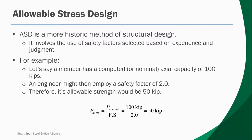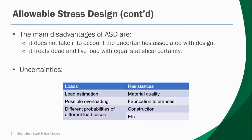Allowable stress design is a more historic method of structural design and involves the use of safety factors primarily based on experience and engineering judgment. Consider a member such as a beam, column, or connection with a computed nominal capacity of 100 kips — meaning failure occurs past 100 kips. An engineer might employ a factor of safety of 2, giving an allowable capacity of 50 kips. Whether reducing capacity or amplifying loads, it introduces a buffer between computed capacity and what the designer is allowed to use.